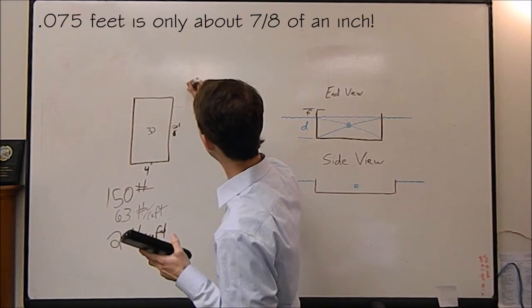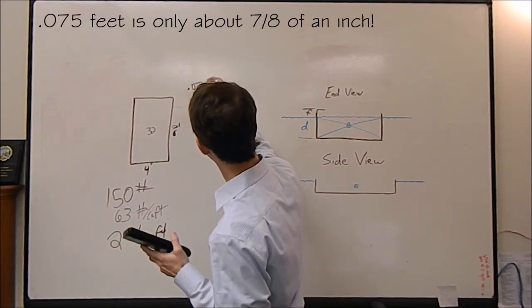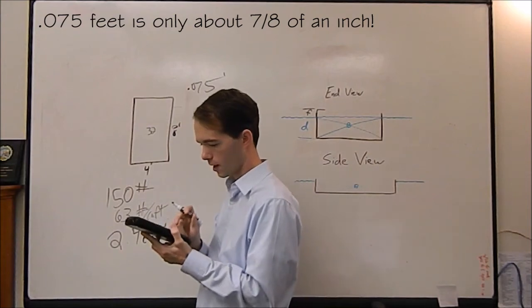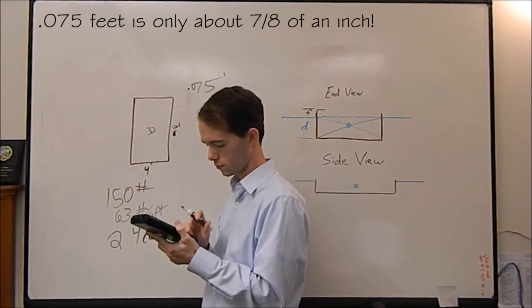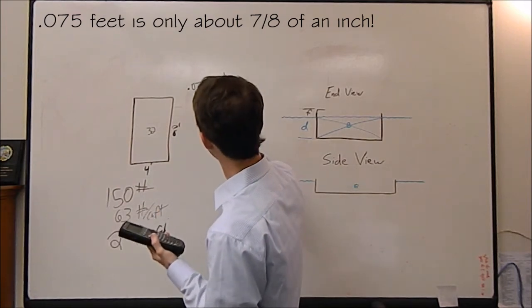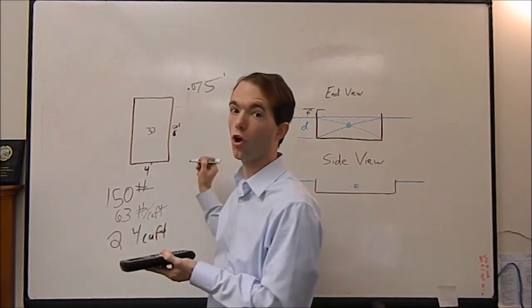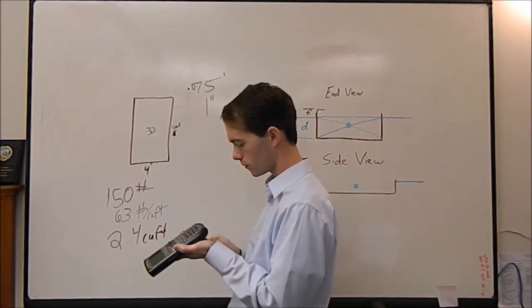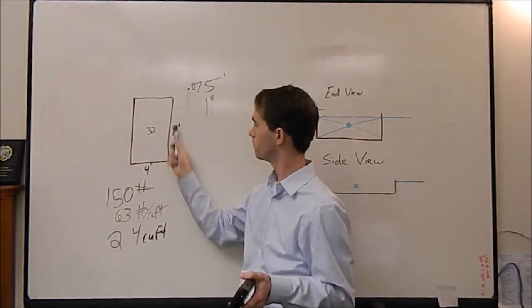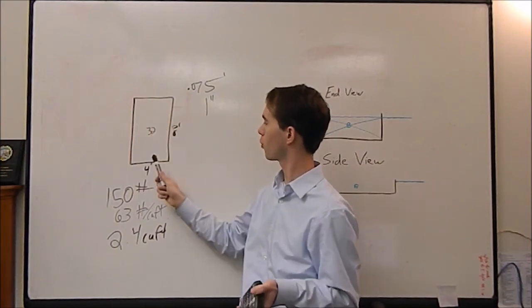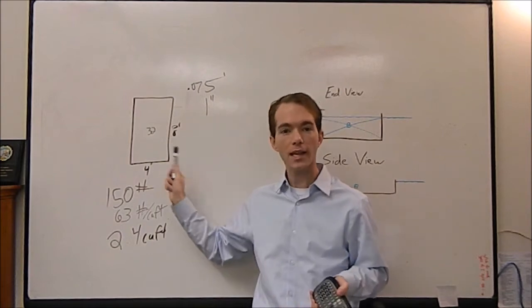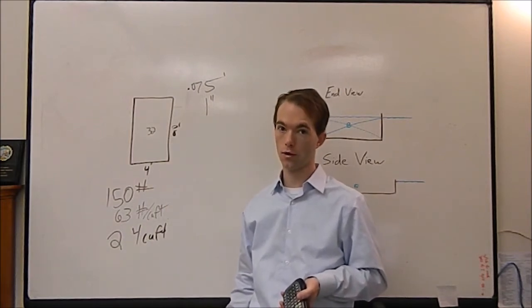So we need 0.075 feet times, well, because obviously that's a meaningless number in feet. We need 0.9 inches. Let's call that one inch. One inch. So if we were to build a boat, a flat bottom boat out of a piece of plywood or whatever, four by eight, 150 pounds would have a draft of slightly less than one inch is all. That is absurd.